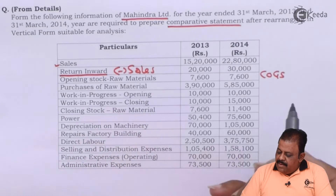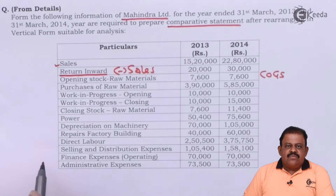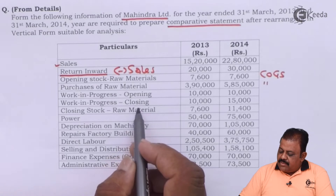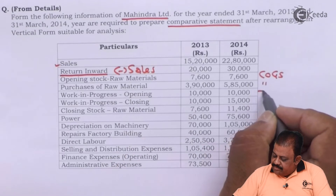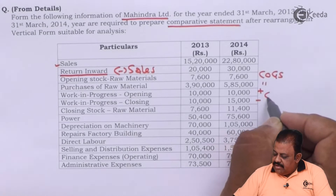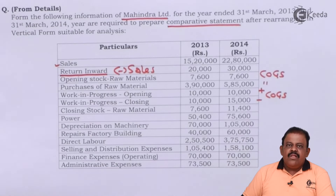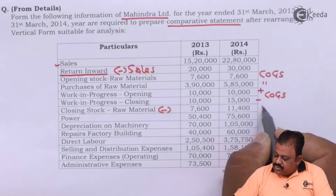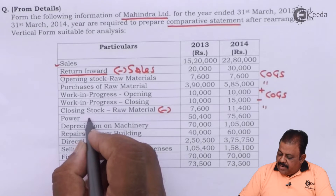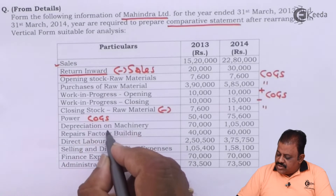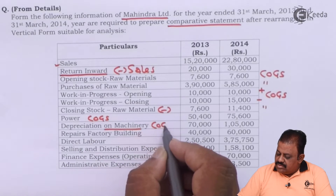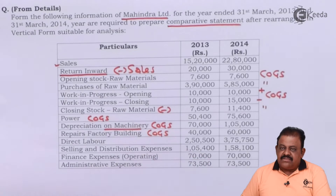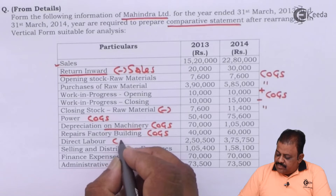Opening stock of raw material is part of cost of goods sold, as are purchases of raw material, work in progress opening and closing — opening will be added, closing will be subtracted while calculating cost of goods sold. Closing stock of raw material will be deducted. Power, depreciation on machinery, repairs to factory building, and direct labor are all part of cost of goods sold.